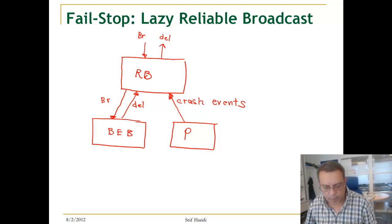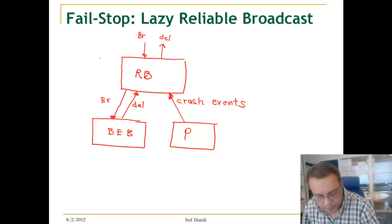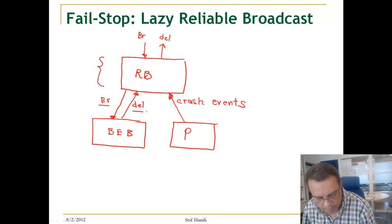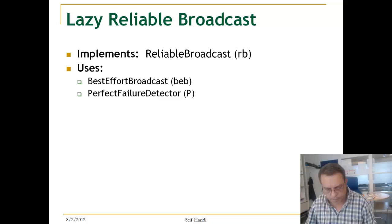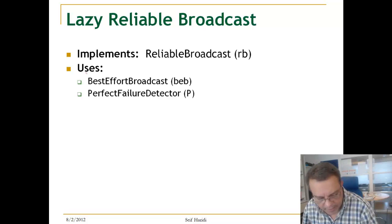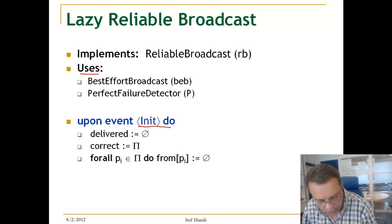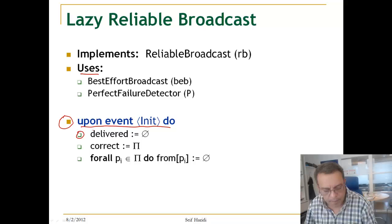So here is our setup. We have a reliable broadcast component with interfaces for requesting a broadcast and delivering a message, and a perfect failure detector component. This is the lazy reliable broadcast algorithm. We use the best-effort broadcast and failure detector.